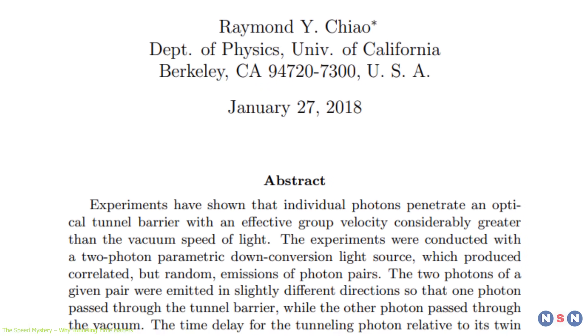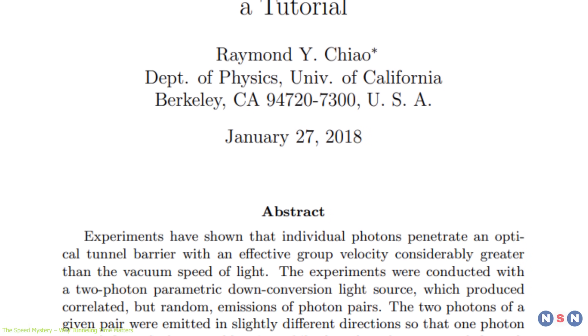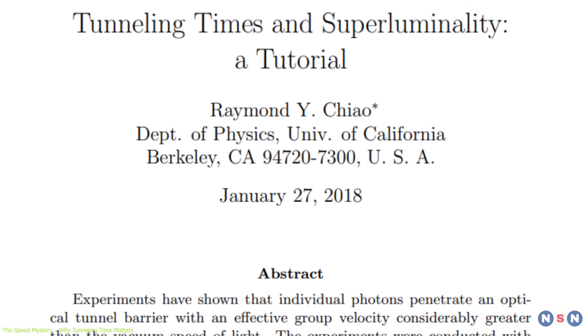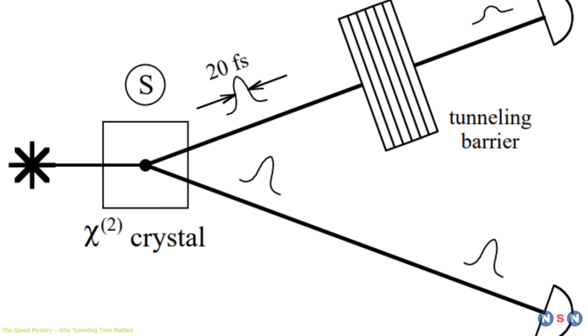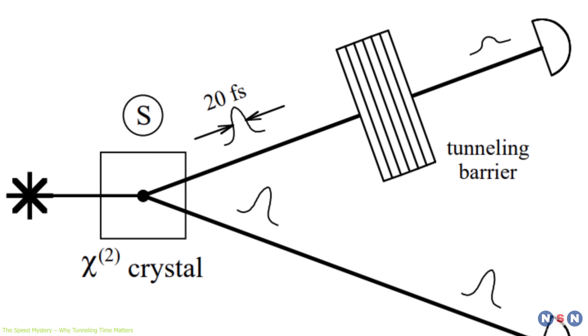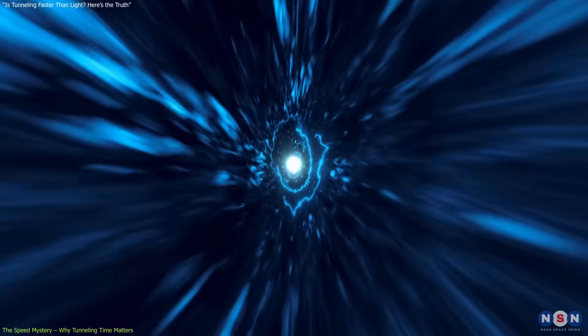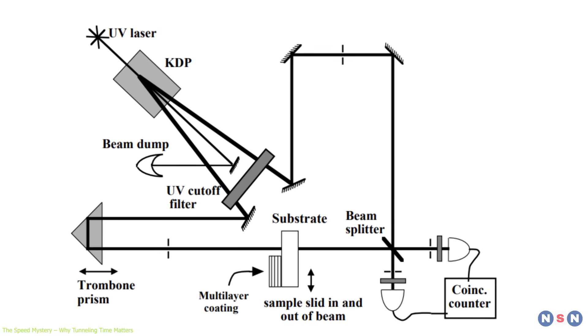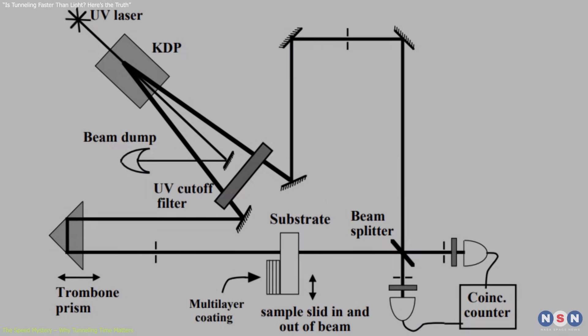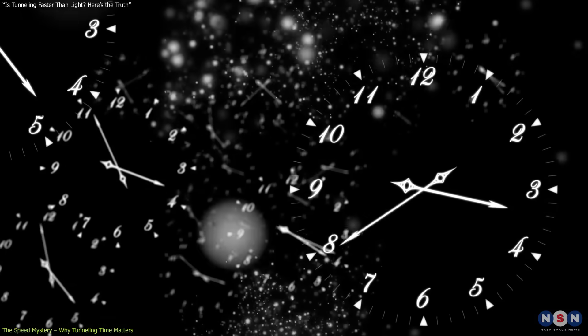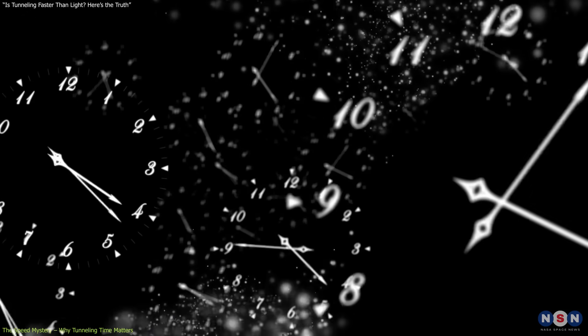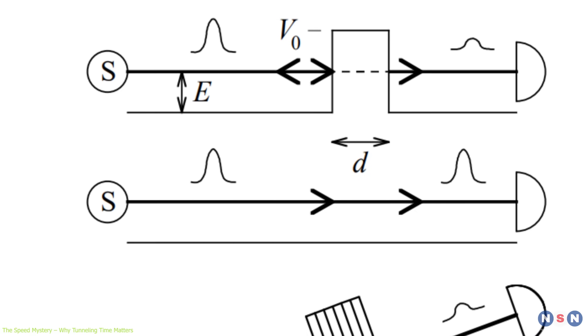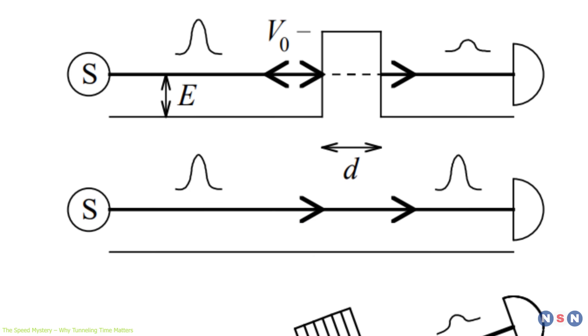In some experiments, researchers observed what seemed like superluminal tunneling by tracking the peak of a particle's wave function. Since that peak appeared to arrive faster than a comparable free-flying particle, it gave the illusion of faster-than-light travel. But this interpretation was based on an indirect measurement and lacked a clear understanding of what time really means in the quantum context. The wave function's peak is a mathematical construct, not a physical stopwatch.